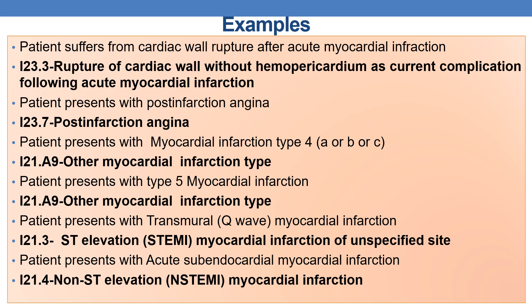Now let us see some examples. A patient suffers cardiac wall rupture after acute myocardial infarction. Cardiac wall rupture following AMI — code I23.3: rupture of cardiac wall without hemopericardium as current complication following acute MI. Next example: patient presents with post-infarction angina — code I23.7.